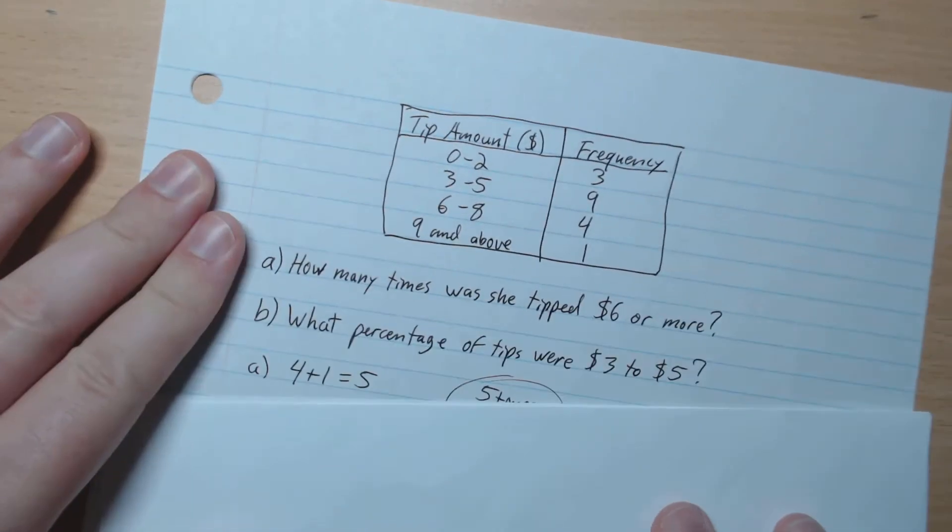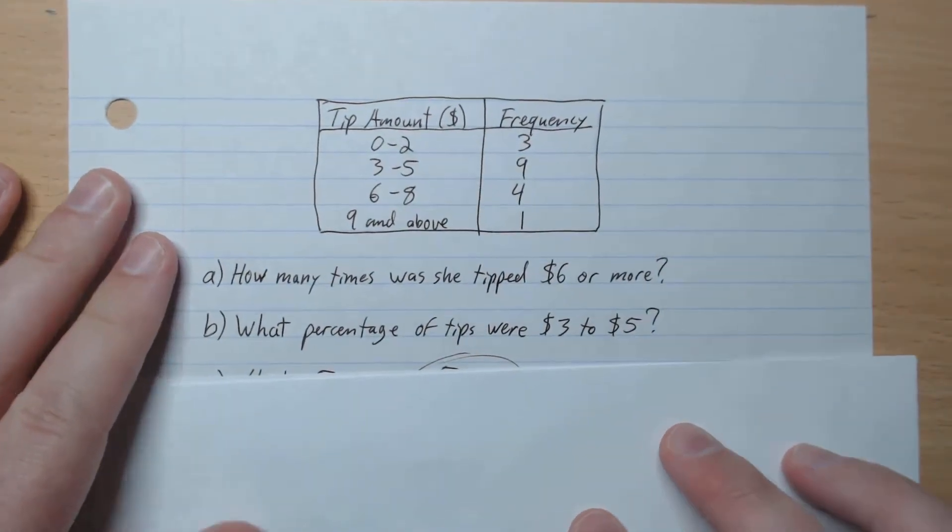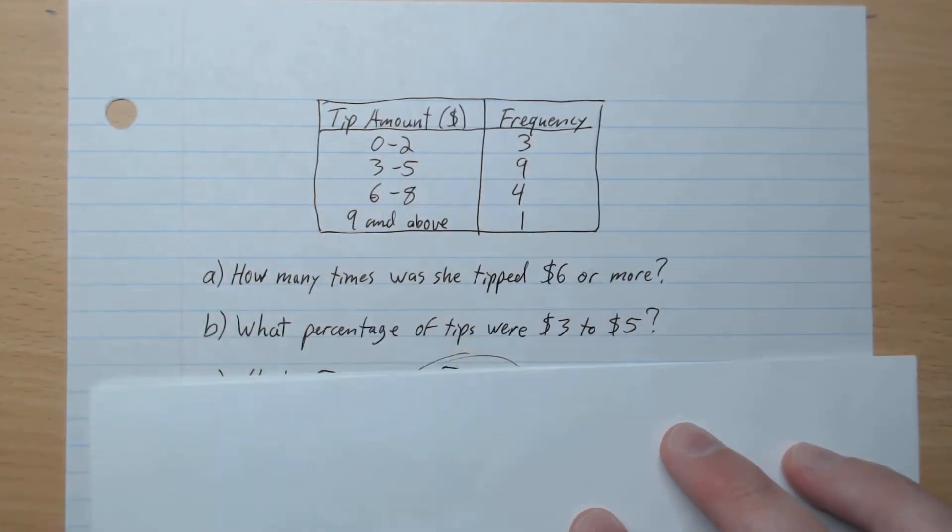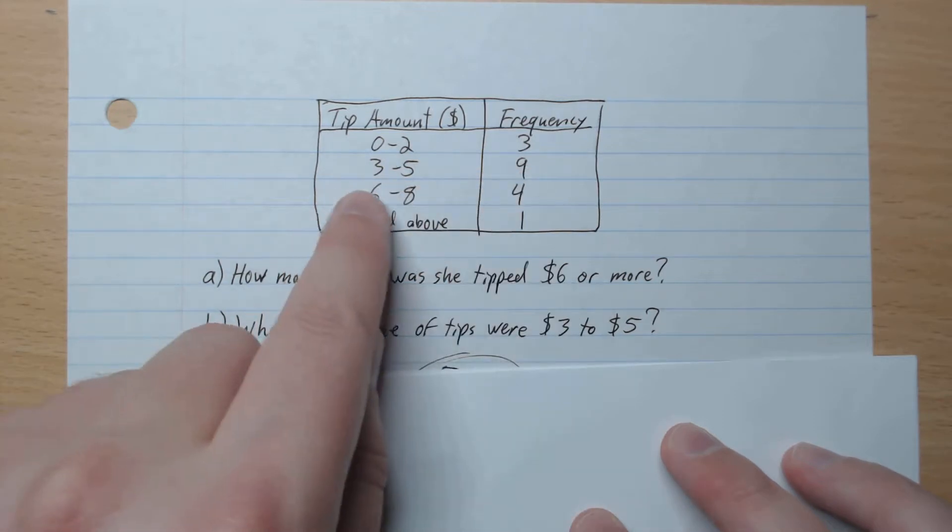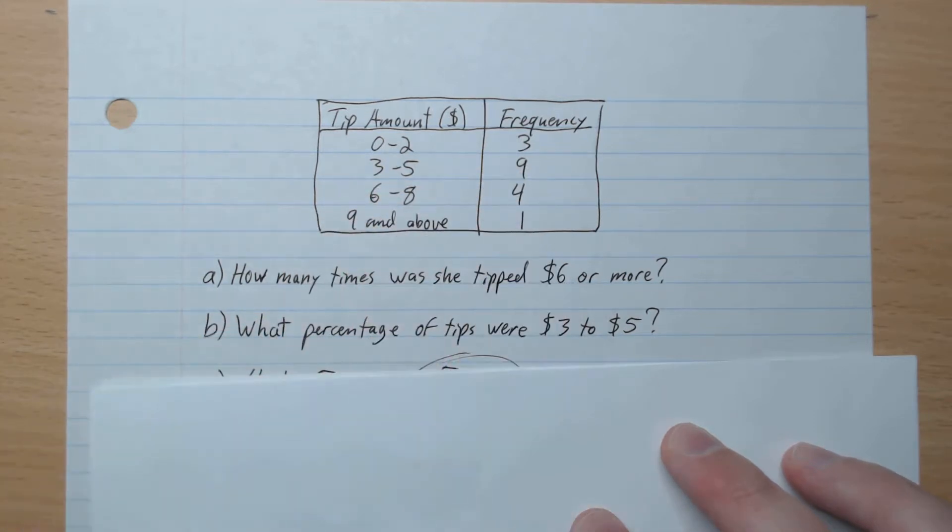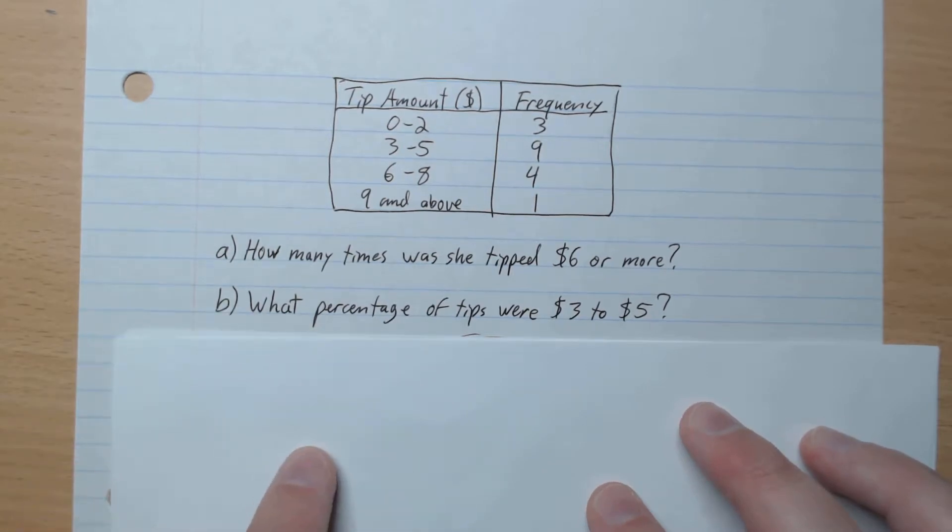Okay, we're back. And so we see here tip amount from 0 to 2 was 3, 3 to 5, 9, 6 to 8, 4, 9 and above one time. So here are some questions for you. A. How many times was she tipped $6 or more? And B. What percentage of tips were $3 to $5? Go ahead and pause the video and answer that.